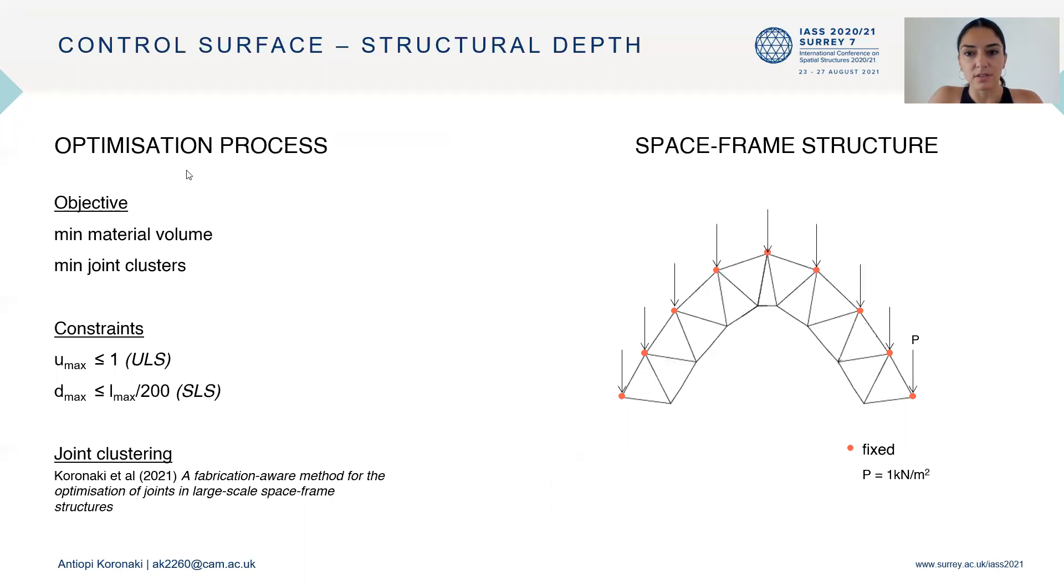In the optimization process, the main objectives are the reduction of material volume and joint clusters. Circular solid sections are assumed for the structure, and the top layers remain fixed during optimization, while the bottom layer vertices can move along the surface normal. This process was applied for all nine different surface variable configurations that we saw.